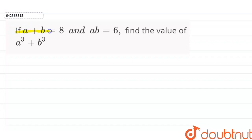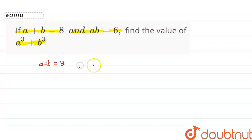If a plus b is equal to 8 and ab is equal to 6, then find the value of a cubed plus b cubed. So first of all, we will write down the given data: a plus b is equal to 8, ab is equal to 6, and we have to calculate the value of a cubed plus b cubed.